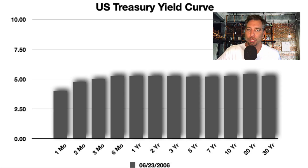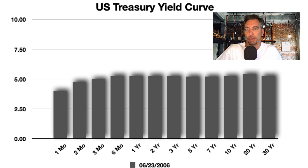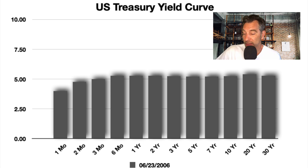Now let's define the treasury yield curve before we define what an inverted yield curve is. Real simple: you have annual interest rates for certain products — one year, ten year, five year, thirty year. These bars represent one month, two month, three months, six months, one year, two year, all the way out to thirty year, and on the left-hand side we start at zero — that's your basis.